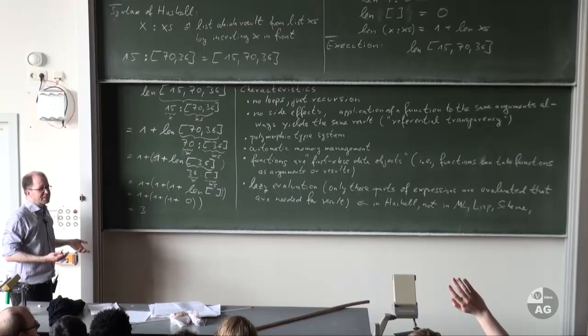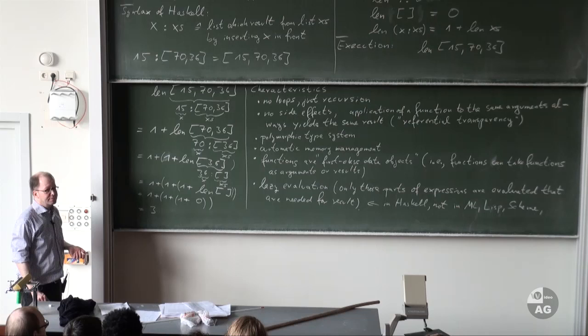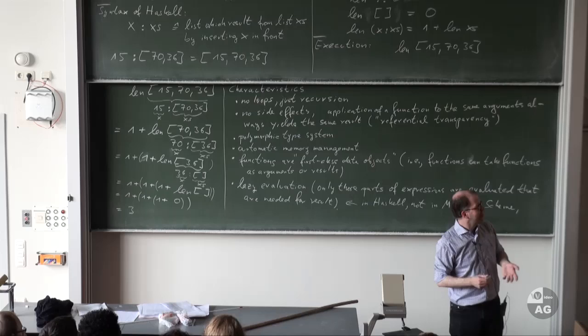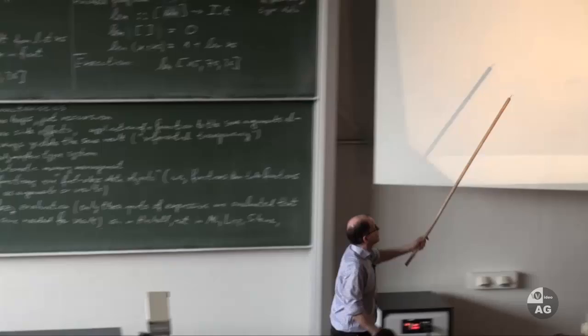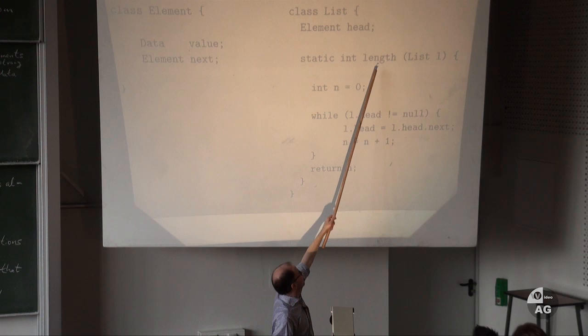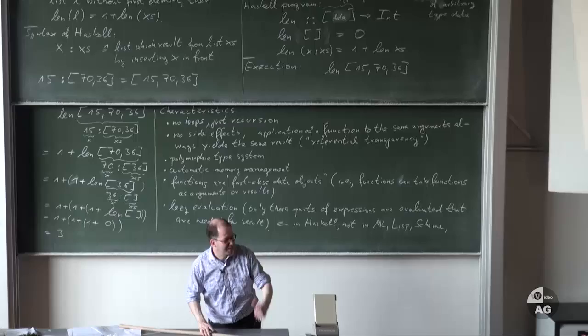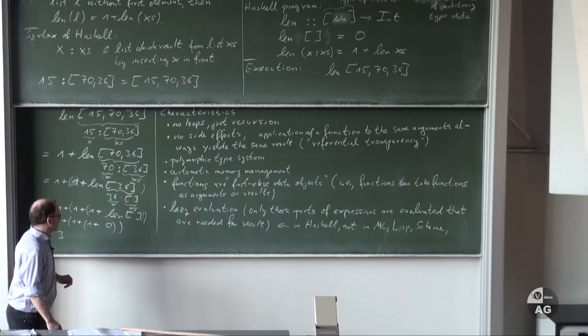These are some of the most important characteristics of functional programming, in particular of Haskell. In Java, methods are second class objects — it's difficult to take a function as input. But in Haskell, functions are first class. We will see examples for that later.